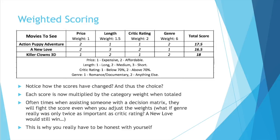Let's say genre is very important to you — give it a weight of six, meaning every score in that category for every choice will be multiplied by six. Critic rating you do care about, but nowhere near as much as genre, so let's give that a two — still twice as important as other attributes. Length has a bit of importance, but only slightly more than a baseline weight of one, so we'll say 1.5. Price is not a big deal — keep that at one. So we're taking our scores from before, but now, before we total them, we're multiplying each one by the weight of the category.